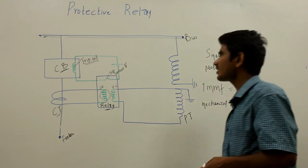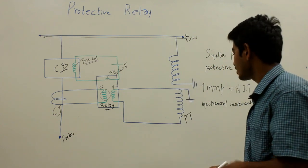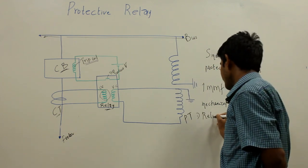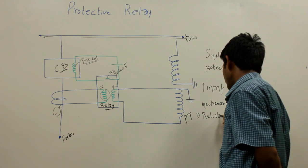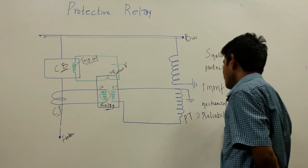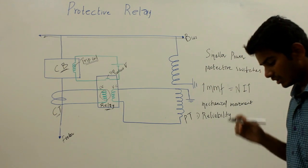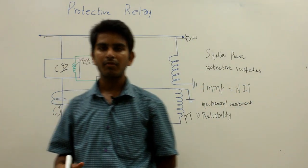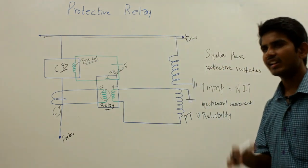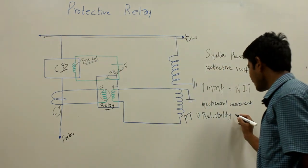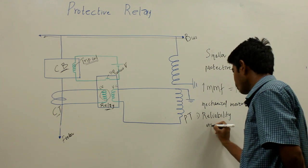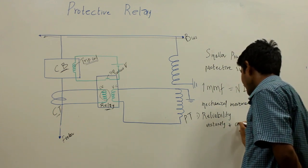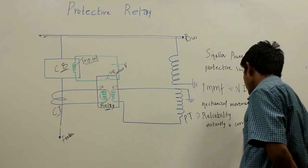Now let us discuss the functional requirements of the protective relay. The first requirement is reliability — it is a requisite of any protective relay. The relay may remain inoperative for a long time before a fault occurs, but when a fault occurs the relay must respond instantly and correctly.